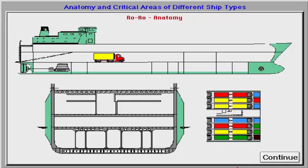Ferry and ro-ro vessels are characterised by large open spaces for easy loading and unloading of vehicles. There are mainly two different concepts: centre casing structure, where access from the vehicle deck is through a casing placed in the centre of the vessel; and side casing structure, where access is from the side of the vessel, which may also be used for other purposes such as stores or accommodation. Cargo access is normally through a bow and/or stern door, occasionally through the side of the vessel.